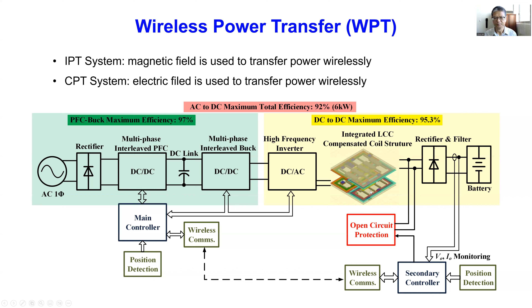Since there is a gap between the transmitter and receiver, it is possible that metals like nails or bottle caps could be unintentionally dropped on top of the transmitter. Or there could be a small animal like a cat that came onto the transmitting pad. Looking at the transmitter and receiver — there could be a nail, bolt, or metal bottle cap on one side, or a small animal sitting on top of the transmitter on the other side.